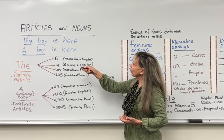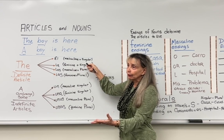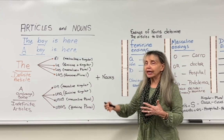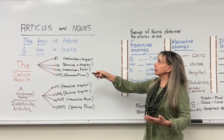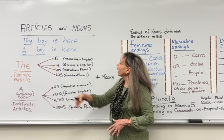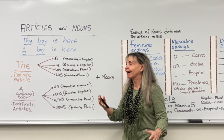The boy is definite — you know what boy is there. And 'a boy' is indefinite — you don't know what boy arrives, you don't know what boy is waiting for you. So these two words are your articles, and 'the' is the one that determines if the sentence is using a definite article.